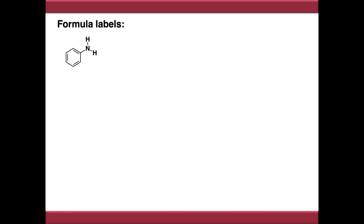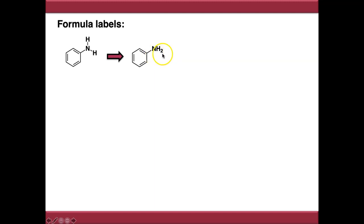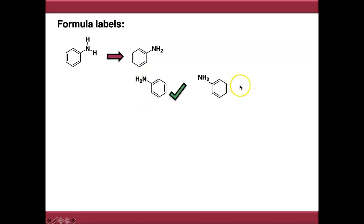The final thing to tidy up structures is labels, starting with formula labels. For a functional group like an amine, you don't need to draw in both NH bonds unless needed for a mechanism — you can abbreviate it as the formula label NH2, which contains all the information. If you need to flip that label, you must reverse it so connectivity is correct — you have a carbon-nitrogen bond, and that should be reflected in the reversed structure. What you shouldn't do is draw things where carbon is bonded to hydrogens incorrectly; always retain your connectivity.